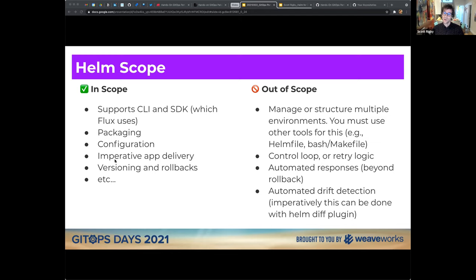Helm does not have automated responses beyond setting up rollback with the atomic flag. There's no retry if something fails. Helm also does not do any automated drift detection. You can use the Helm diff plugin imperatively to see what Helm believes the differences are on your cluster versus what you have in your files. Notably, Flux is, as far as I know, the only CD tool that purely uses Helm's SDK — no shelling out to a binary, no forking Helm.